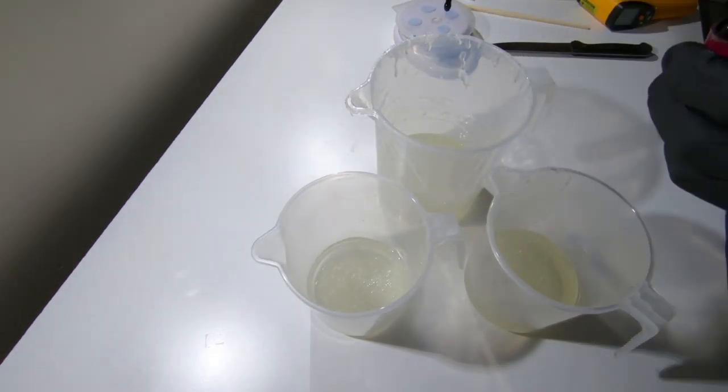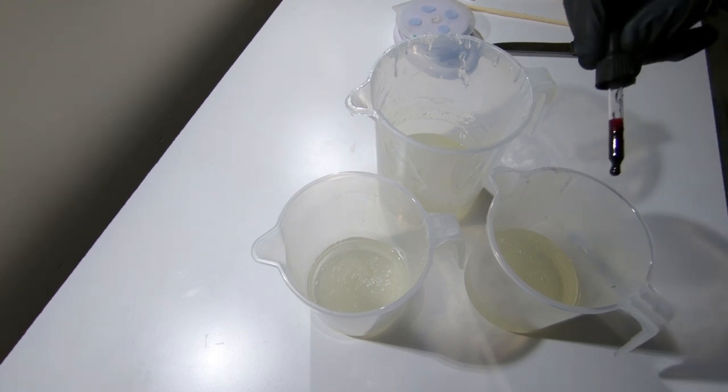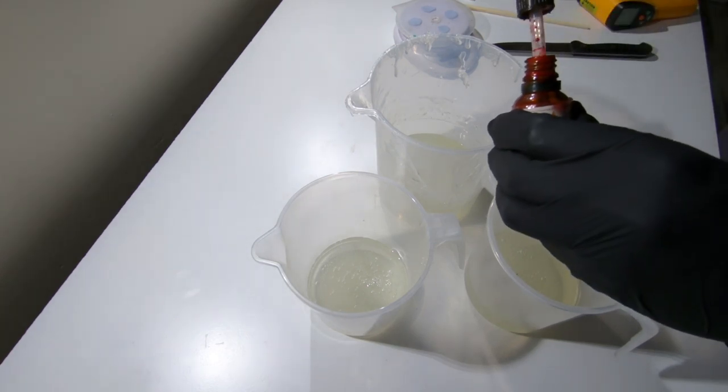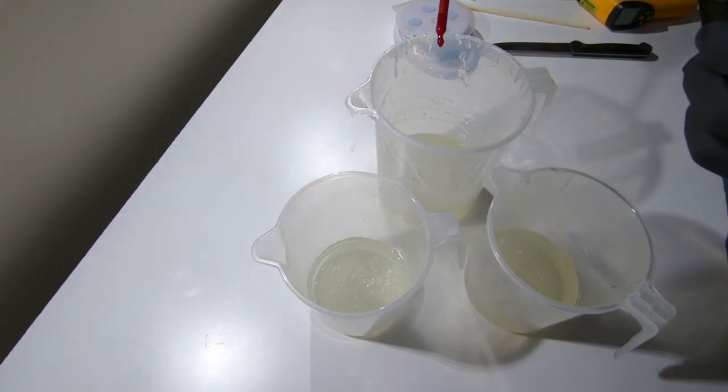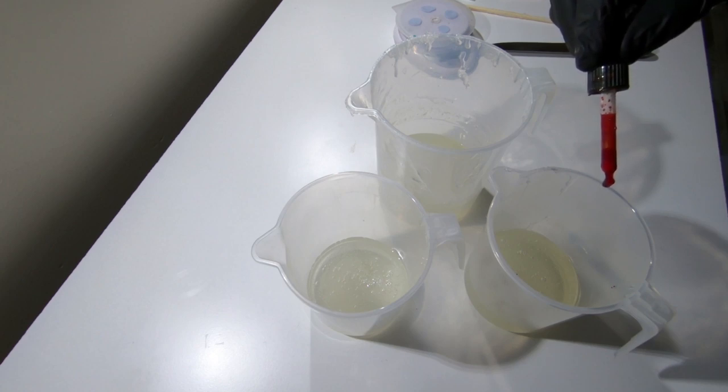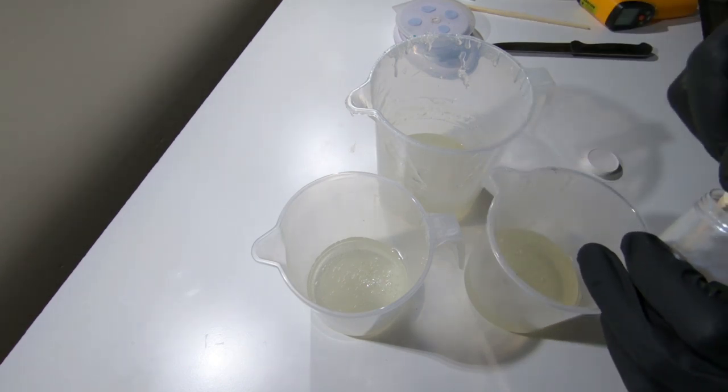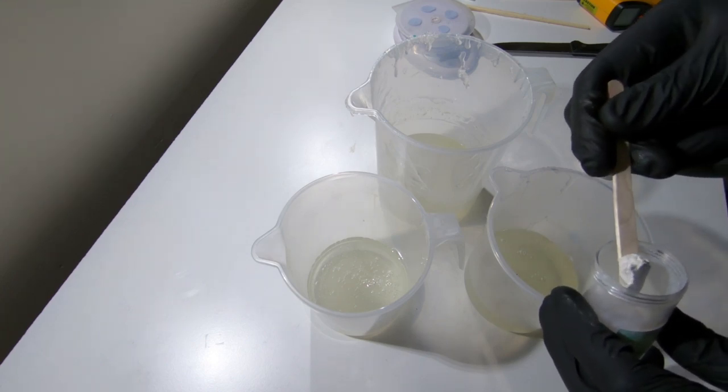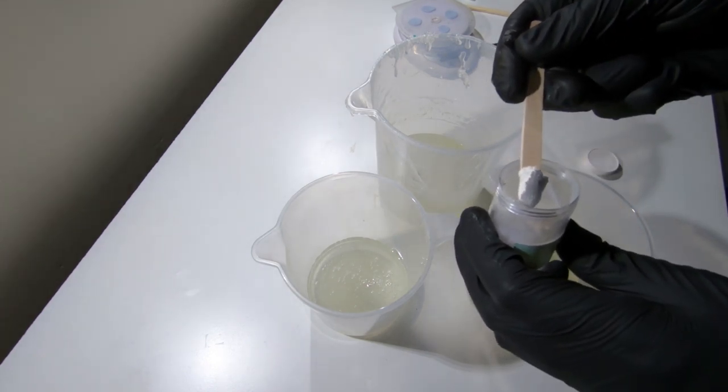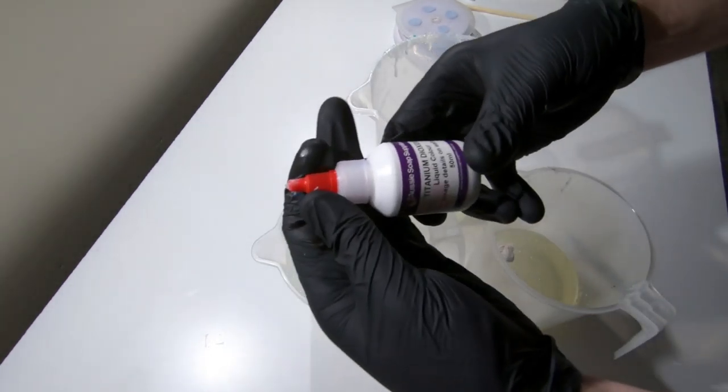This is the magenta, two of the magenta and then one. And then two of the red. Two drops of red and one drop of red. Okay, so this is the white pearl mica, not really sure how much to add but maybe that. And then this one is going to get the full white which is this.